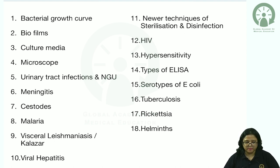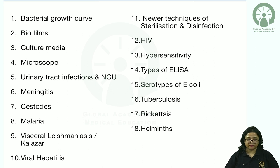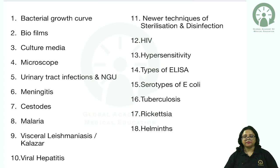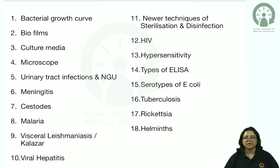No discussion of microbiology is complete without culture media. We will discuss types of microscope, urinary tract infection, causes of non-gonococcal urethritis, bacterial cause of acute pyogenic meningitis, cestodes with reference to the tapeworm, cystic cirrhosis, and in malaria we will discuss the different plasmodium species and their diagnostic features in microscopy and about Plasmodium knowlesi.